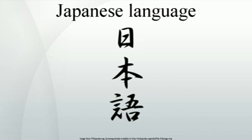Late Middle Japanese covers the years from 1185 to 1600, and is normally divided into two sections, roughly equivalent to the Kamakura period and the Muromachi period, respectively. The later forms of Late Middle Japanese are the first to be described by non-native sources, in this case the Jesuit and Franciscan missionaries. Thus there is better documentation of Late Middle Japanese phonology than for previous forms, for instance the Arte da Lingoa de Iapam. Among other sound changes, the sequence /wo/ merges to /o/, and /p/ is reintroduced from Chinese, and /we/ merges with /je/.